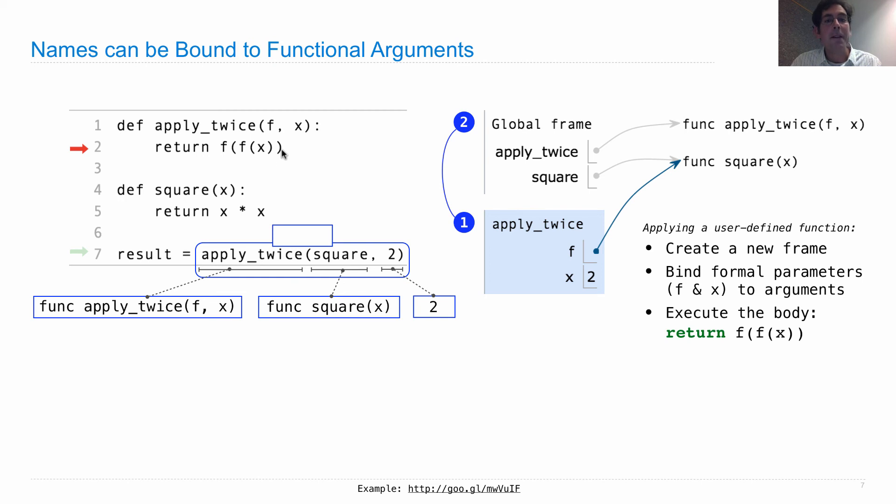Now when we evaluate f of f of x, what environment do we do it in? It's the environment that starts with the frame we just created and then is followed by the global frame. So when we look up the name f, we're going to look first in this frame and then in the global frame. We only look in the global frame if we don't find it in the local frame. So when we look up what f means, we look here. We find the name f, which is what we were looking for. And we realize that it means the function that squares. And that's why in the rest of the example, the square function was called twice, even though here it was called f.